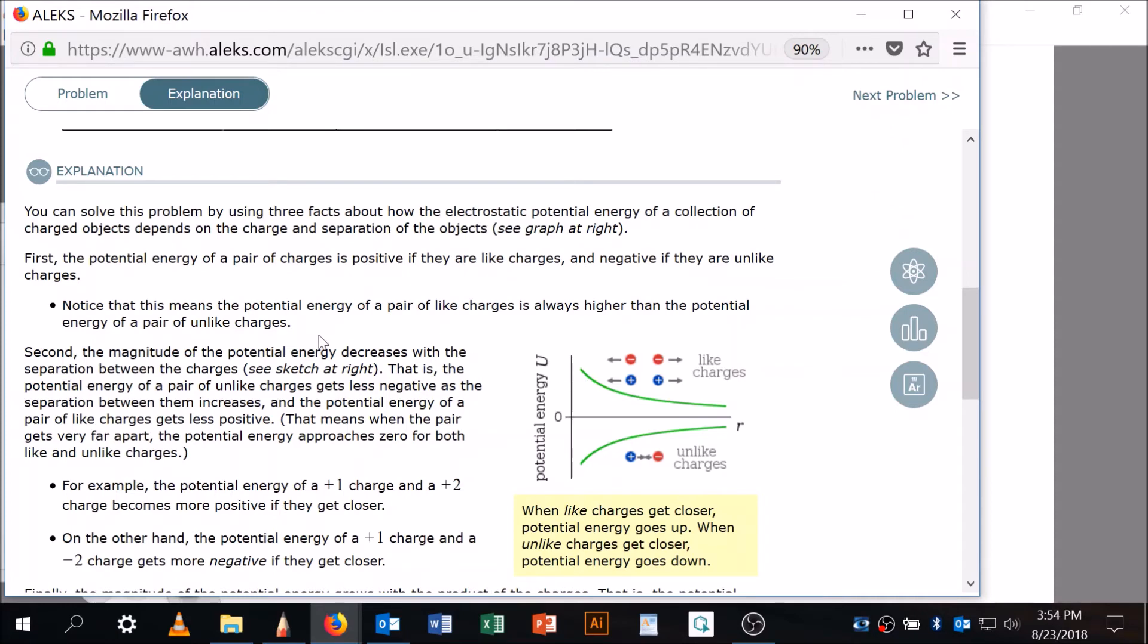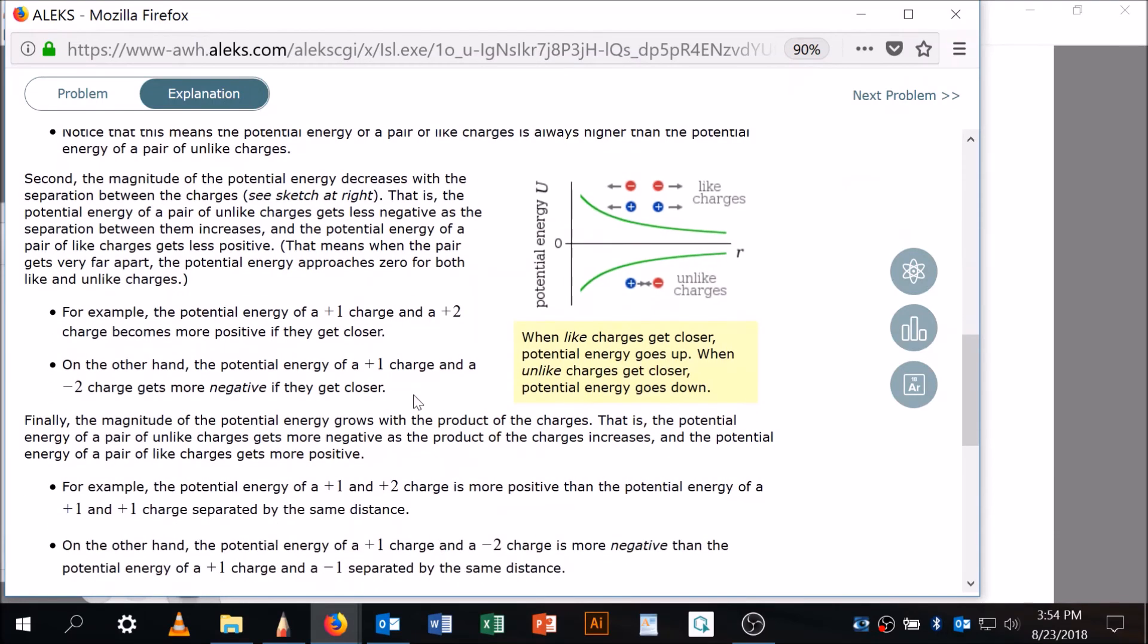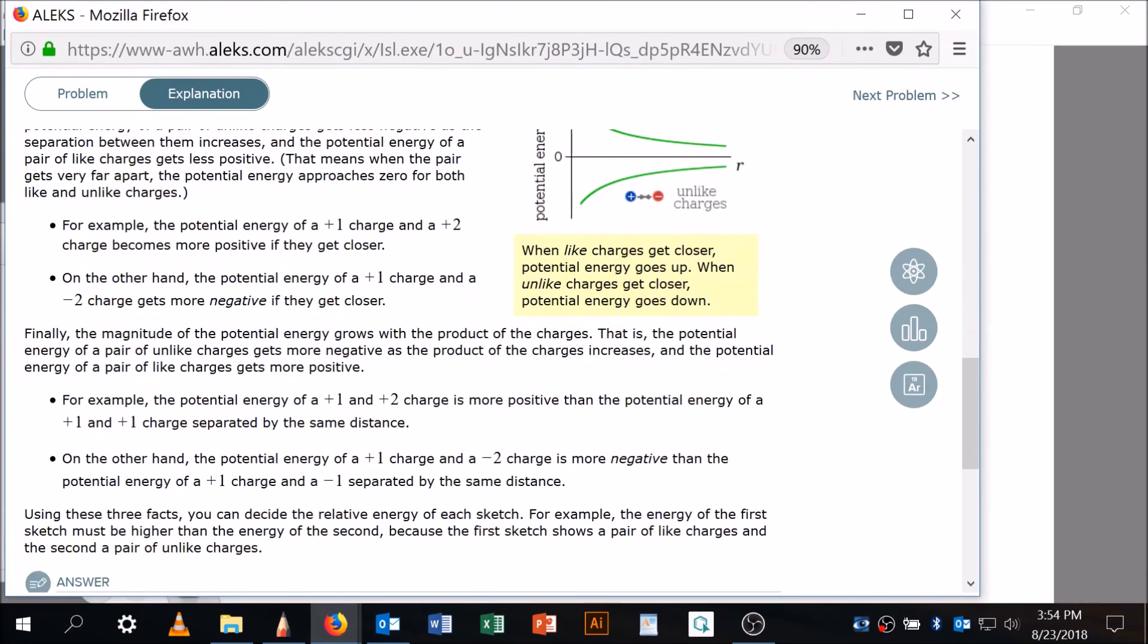Okay, so first of all, this means that the potential energy of a pair of like charges, and here's some like charges, two negatives or two positives, is always higher than the potential energy of a pair of unlike charges. Can you see that? This graph is always above zero, and this one's always below zero.